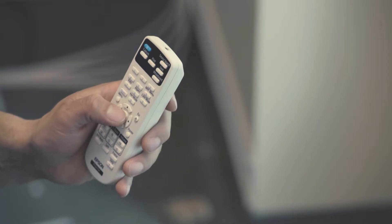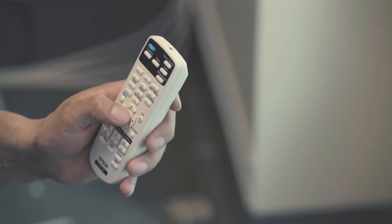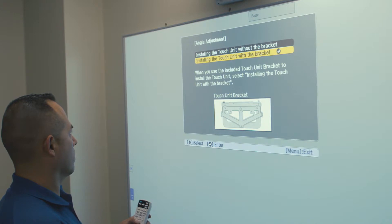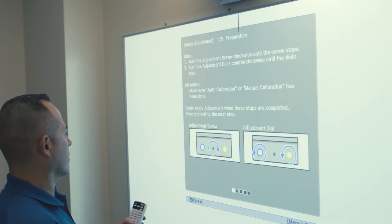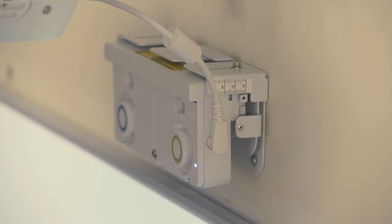This will display screen 1 of the touch calibration process, which will prompt you to select how to proceed based on the touch module being mounted on the board or above the board. For the purpose of this video, we are showing the touch module mounted above the board. Select Above the board.